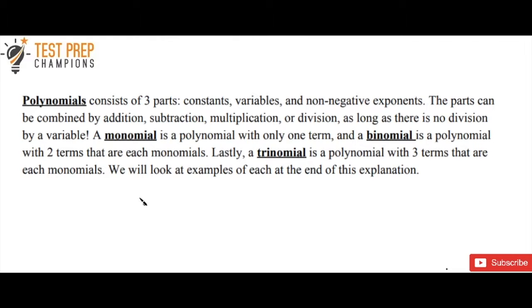A monomial is a polynomial with only one term and a binomial is a polynomial with two terms that are each monomials. Lastly, a trinomial is a polynomial with three terms that are each monomials, and we're going to look at some examples of this at the end of the explanation.